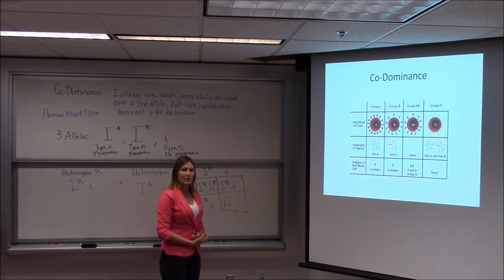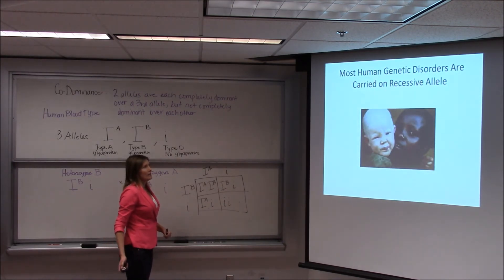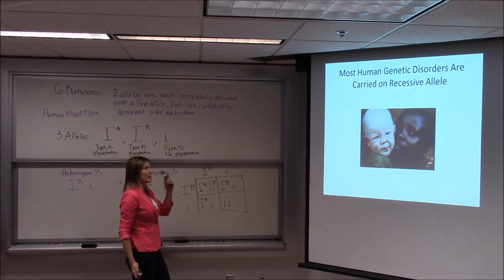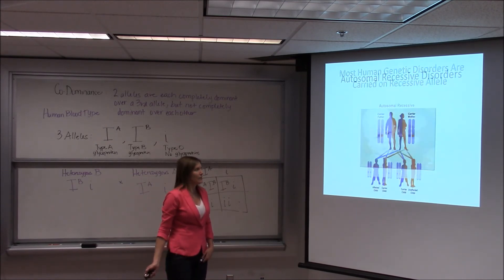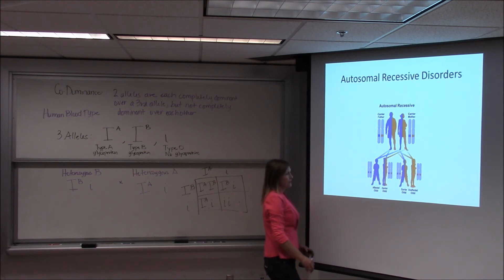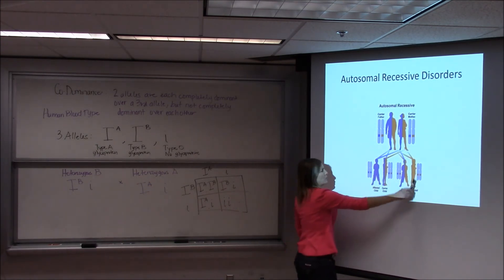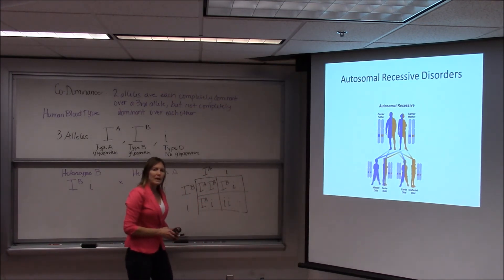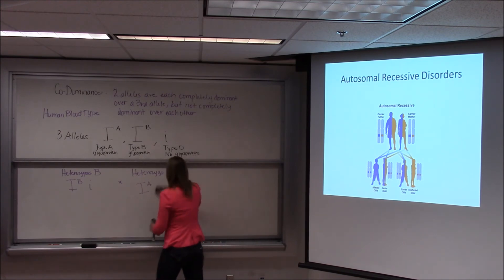That's how co-dominance works and how human blood type works. The next category of inheritance we're going to look at is when genetic disorders are carried on the dominant allele. Most human genetic disorders are carried on the recessive allele — autosomal recessive inheritance, like albinism. The way that pattern works is if you have two carriers, one out of four children could have the disease, 50% are carriers, and 25% on average are going to be healthy. But what if it's carried on the dominant allele? That's the case for a couple of human disorders.